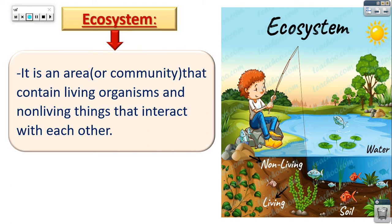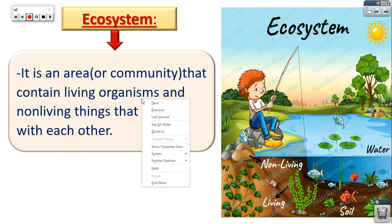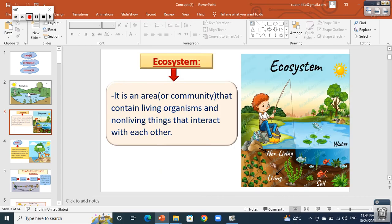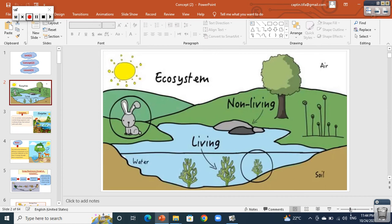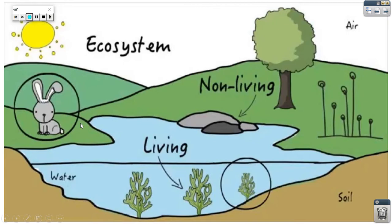What is the meaning of interaction? Interaction means there are relations between them. Let's understand this point. In this picture, the rabbit will eat from the grass, so there is an interaction or relation between the rabbit and the grass. It is an interaction between one living organism and another living organism.